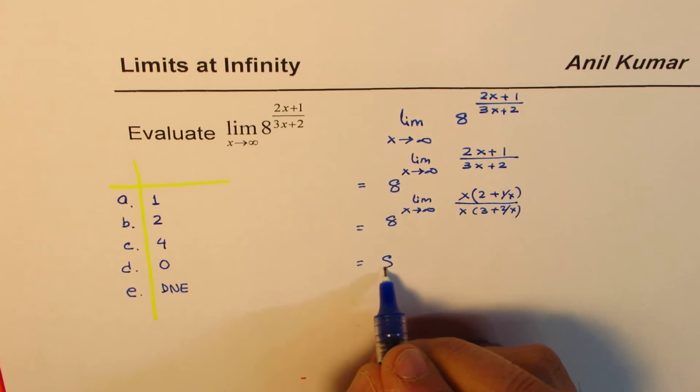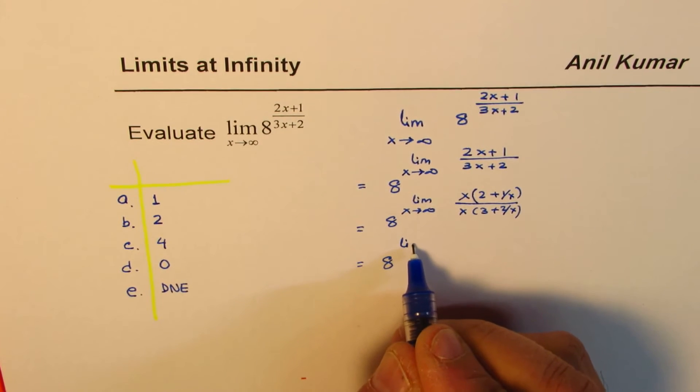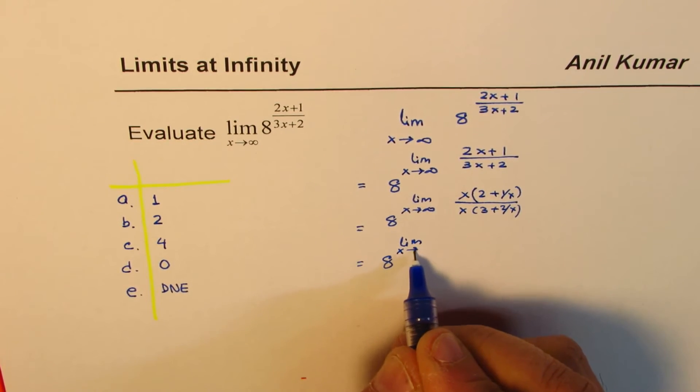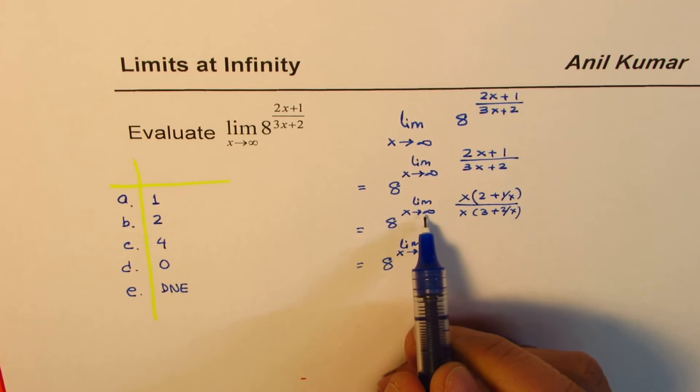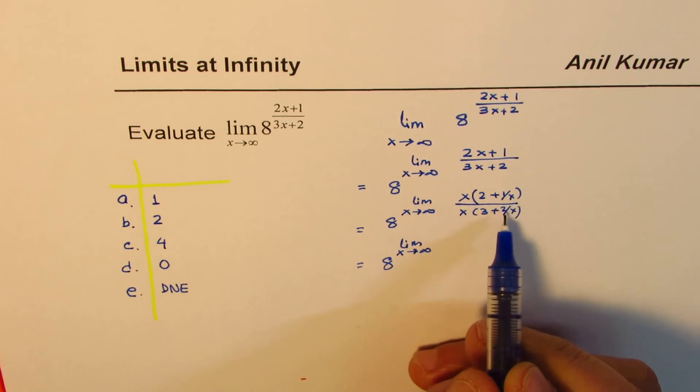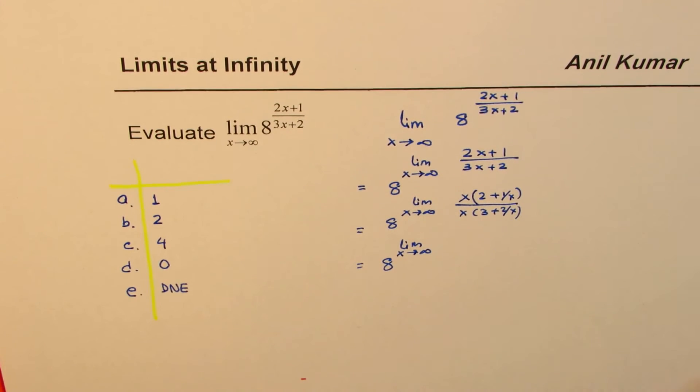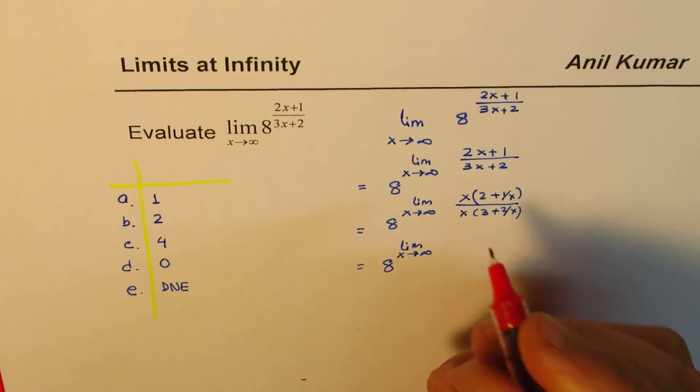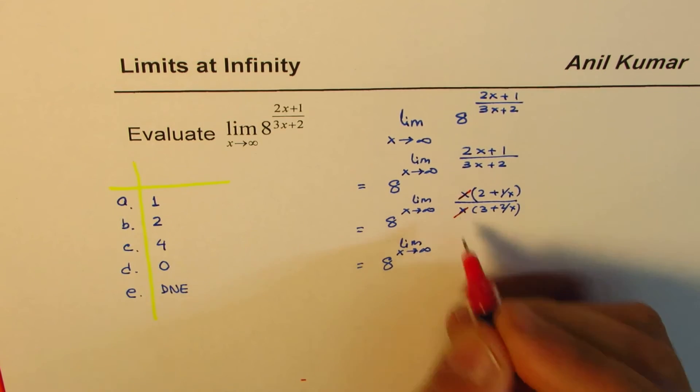Now, as you can see, we have 8 to the power of limit x approaches infinity. As x approaches a large number, 1 over x and 2 over x approach 0. So we can cancel these x's. We can cancel these x's.